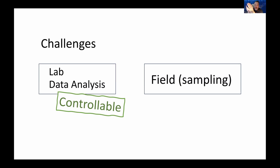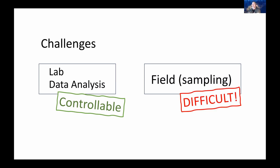From the end-user perspective, you need a reliable lab to do the work and reliable experts to analyze data. The field sampling part is where the problems are — it's very unpredictable and things can go severely wrong. This is why I'm emphasizing it: if you're thinking about a study like this, this is where you should really concentrate and think carefully.